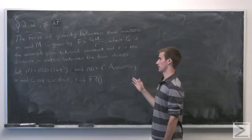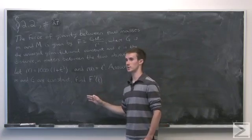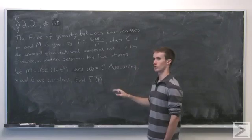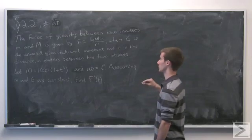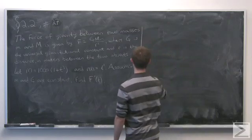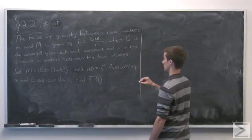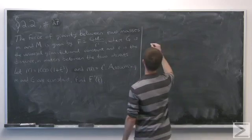Now, assuming that gravitational constant and the other mass are constant, we're going to look for the rate of change, instantaneous rate of change of the force between the two objects. So the first step is to figure out exactly what f of t is.